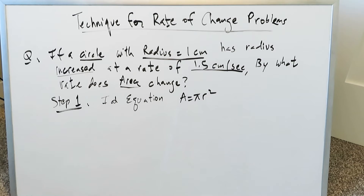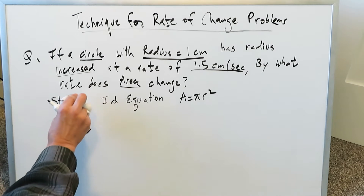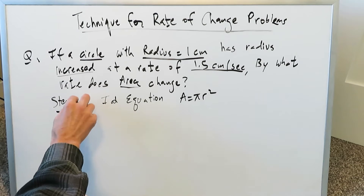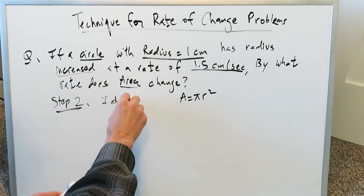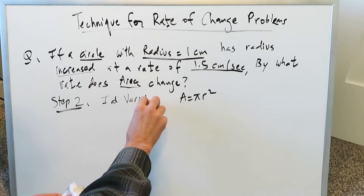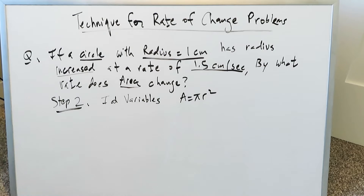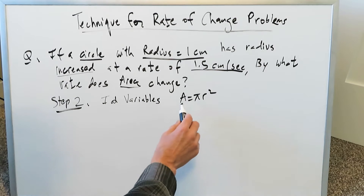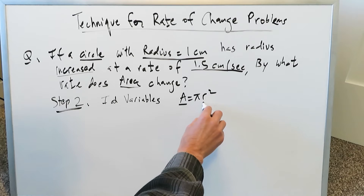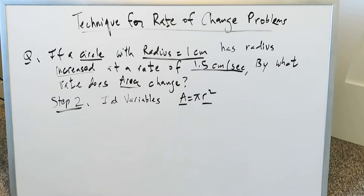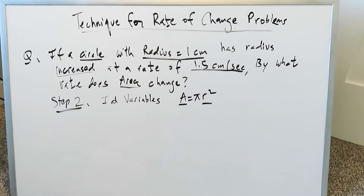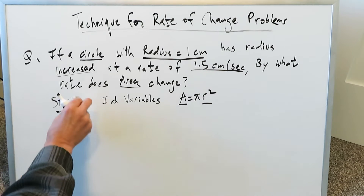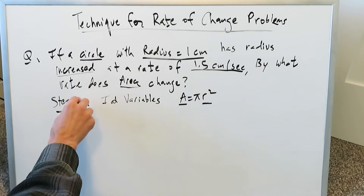The first step is usually the easy step: identify an equation that handles everything you're looking at with regards to your variables. When we're talking about circles with radius and area, our equation is A = πr². That is Step 1. Step 2 is to identify the variables — what will change and what will not. The variables are area and radius, since both are susceptible to changing. Pi is a constant; it's not going to change.